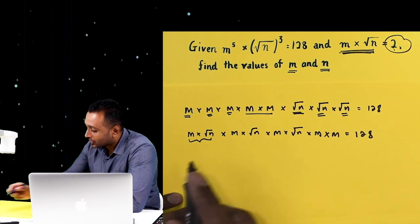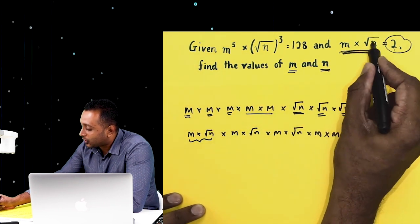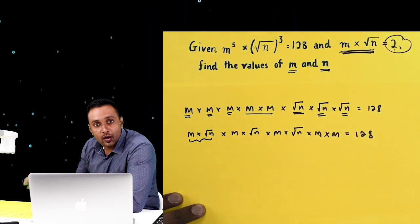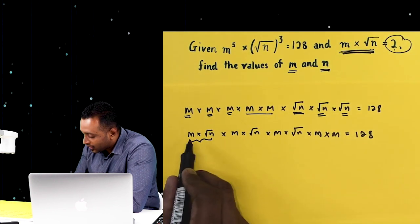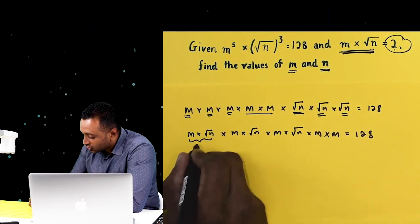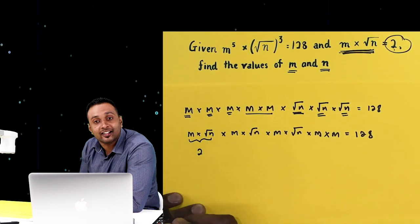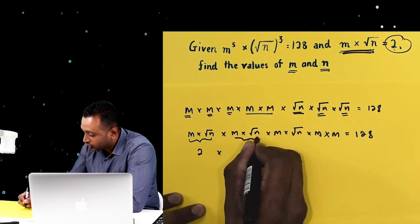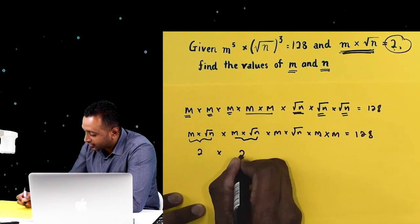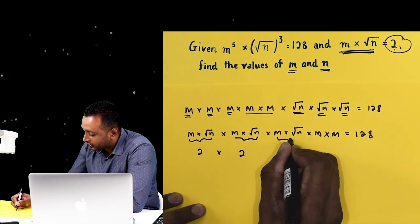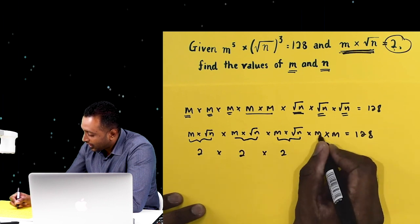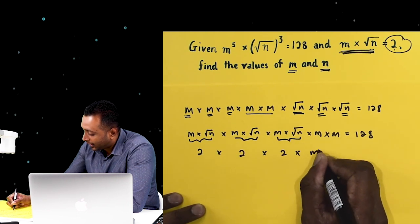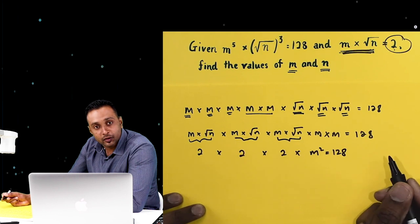Did you notice here? m times square root n equals 2. So each group of m times square root n gives 2. I multiply: 2 times 2 times 2, and m times m is m squared, which accounts for 128.